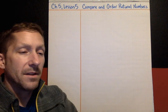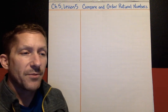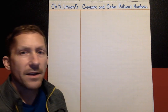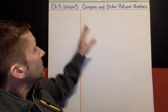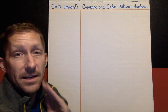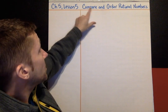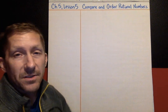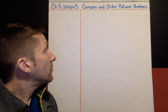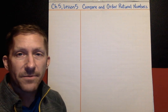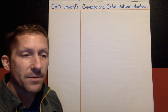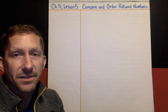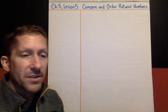Hi students, this is Chapter 5, Lesson 5. The topic of this lesson — what you should be able to do at the end of it — is compare and order rational numbers. Remember that a rational number from the previous lesson is any number that can be written as a fraction; it's most numbers that you know.